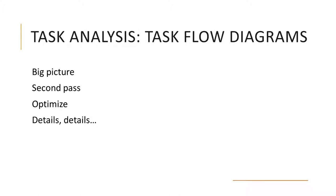In task analysis, after we've done the observations looking for those four things — manually intensive, cognitively demanding, error-prone, and knowledge-dependent — we're going to do task analysis flow diagrams in four steps. First, the big picture of what you observed. Then you take a second pass to add a little more detail and break things out. After that, you optimize it. Then there's a step I'll introduce involving filling out the details, and then you start designing.